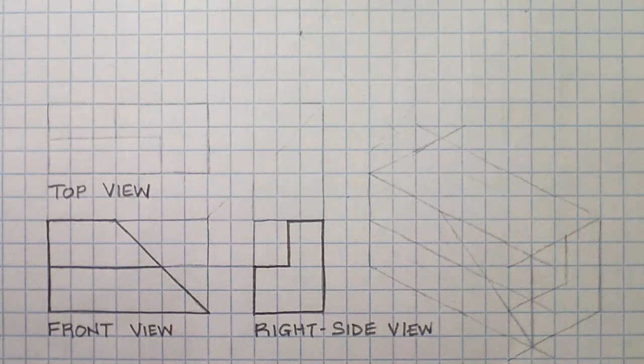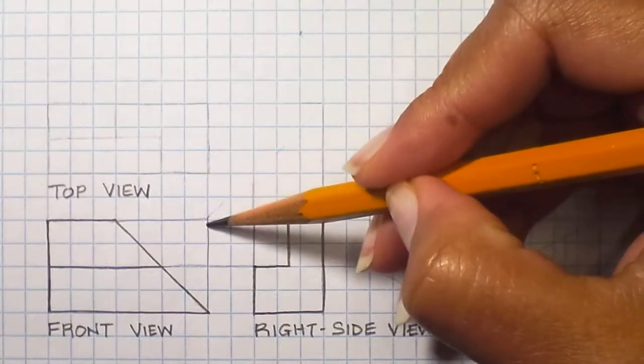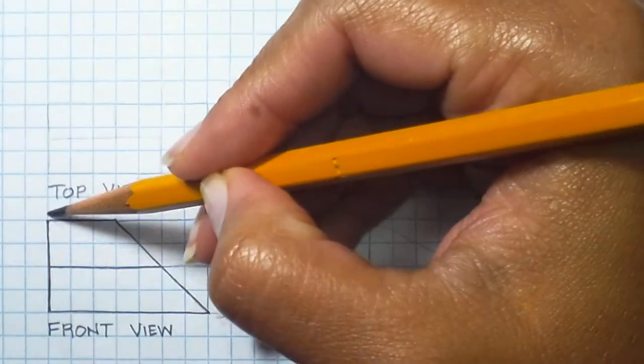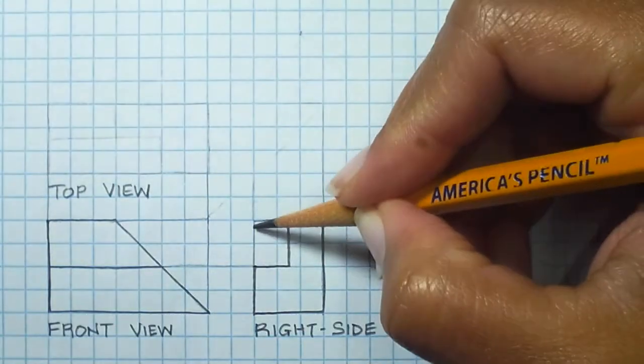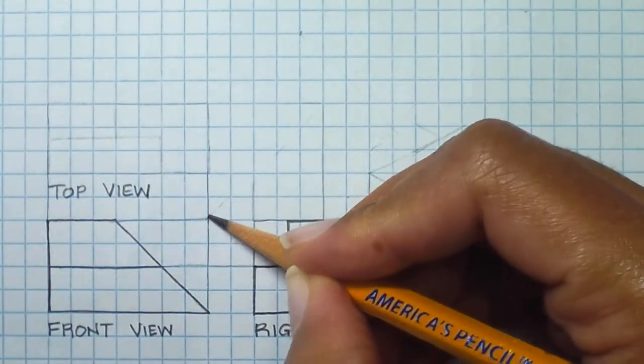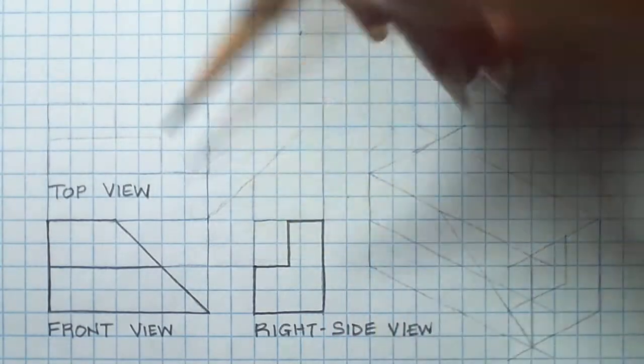So we're going to start with constructing the top view and I'm going to project my width up to get the placement of my view. I also have my mitre line that's here as well and transfer